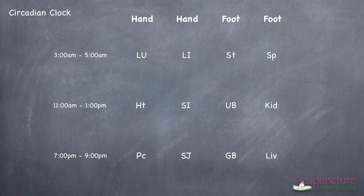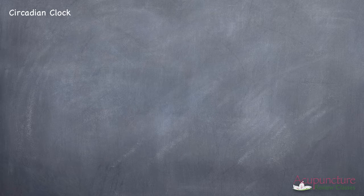So we're looking at the circadian clock and we're going to add in the Tai Yin, the Shao Yin, the Yang Ming and all that. So let's start with a diagram that has four organs across. We have lung, LI, stomach, and spleen.